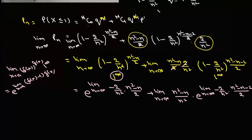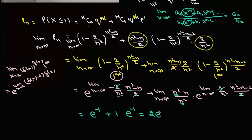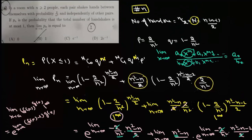We use the rule that for a rational function limit as n → ∞, if the highest powers match, the answer is the ratio of leading coefficients. For the first exponent, highest power is n² in both numerator and denominator, coefficient is −1, giving e^(−1). For the second term, the coefficient (n²−n)/n² → 1, and the exponent limit also gives −1, so it contributes e^(−1). The total is e^(−1) + e^(−1) = 2e^(−1), which is option D.